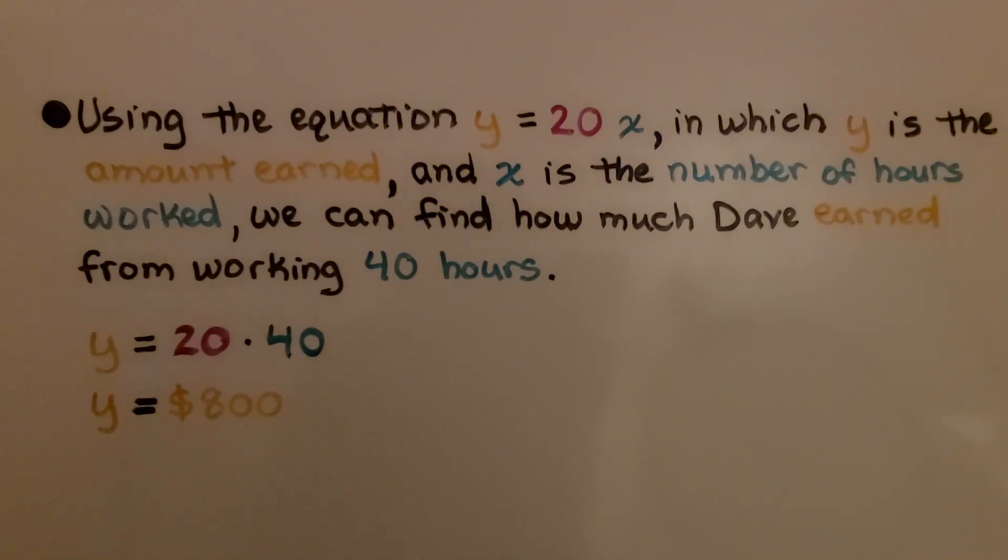Using the equation y equals 20x in which y is the amount earned and x is the number of hours worked, we can find how much Dave earned from working 40 hours. We put 40 in place of x and we have y equals 20 times 40. We know the amount earned y equals $800.